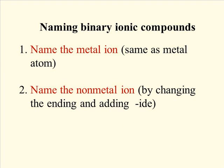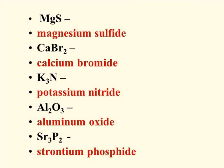When you name a binary compound, you name the metal ion the same as the metal atom, then name the non-metal ion by changing the ending and adding -ide. MgS is magnesium sulfide, CaBr₂ is calcium bromide, then potassium nitride, aluminum oxide, and strontium phosphide.